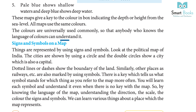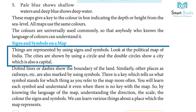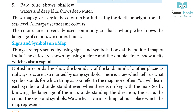Signs and symbols on a map: things are represented using signs and symbols. On the political map of India, cities are shown using a circle, and double circles show a city that is also a capital. Dotted lines or dashes show the boundary of land. Railways and other places are also marked using symbols. A key tells us what each symbol stands for. As you use maps more often, you will learn each symbol even without a key.